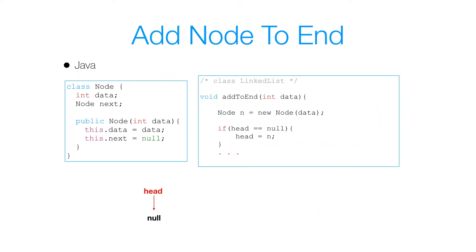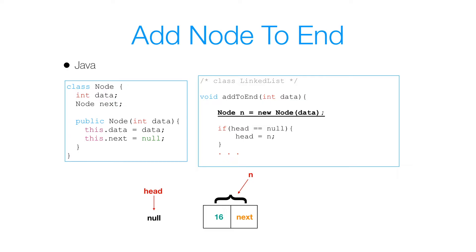Now suppose that we didn't have any linked list nodes in our linked list. How do we handle that case? Well, we first create the node that we want to add — I called my node n, so n references a node with data 16. I make a conditional check: if my head is equal to null, then all I do is set my head to reference the same object that n references. That's how I would add a node to the end of an empty list.